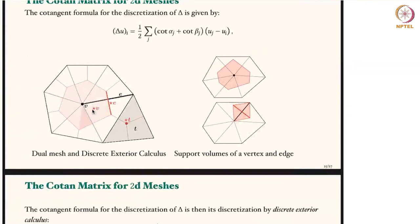For the zero Laplacian — the scalar Laplacian — in exterior calculus terminology, its discretization yields the cotangent formula. This formula wasn't originally written referencing discrete exterior calculus in the Pinkall-Polthier work from the 1980s-90s, but it comes out evidently if you look at it from the perspective of a discrete exterior calculus discretization of these Laplacians.